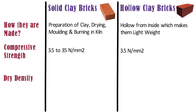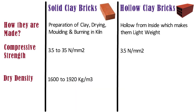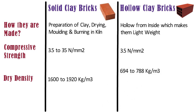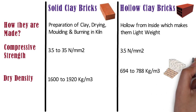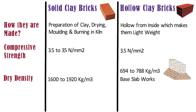Dry density. The density of solid clay bricks varies from 1600 to 1920 kg per m³, according to the class of bricks. Whereas, the dry density of hollow clay bricks varies from 694 to 788 kg per m³. Thus, the hollow clay bricks cannot be used especially for foundation and base slab works or in areas of high ground water table, as they would not be able to resist the negative pressure of water and capillary action.